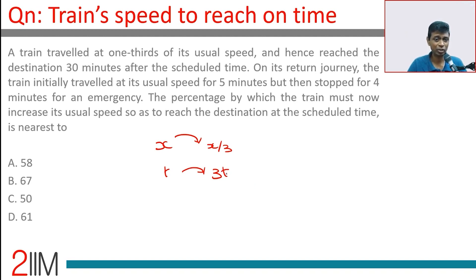This 3t is 30 minutes after the scheduled time. So the extra 2t is 30 minutes, which means t is 15 minutes. When the train travels at x it takes 15 minutes. When it travels at x by 3 it takes 45 minutes.